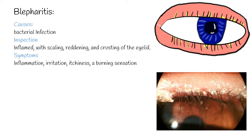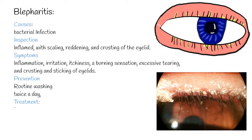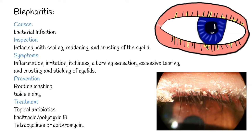Routine washing of the eyelids helps subdue symptoms and prevent blepharitis — washing each eyelid for 30 seconds, twice a day, with a single drop of hypoallergenic soap. Treatment: topical antibiotics such as bacitracin-polymyxin B ophthalmic ointment can be applied. Systemic antibiotics can be used in severe cases, for example tetracyclines or azithromycin. Sometimes corticosteroids in conjunction with antibiotics are used. The supplement N-acetylcysteine may be effective for blepharitis.